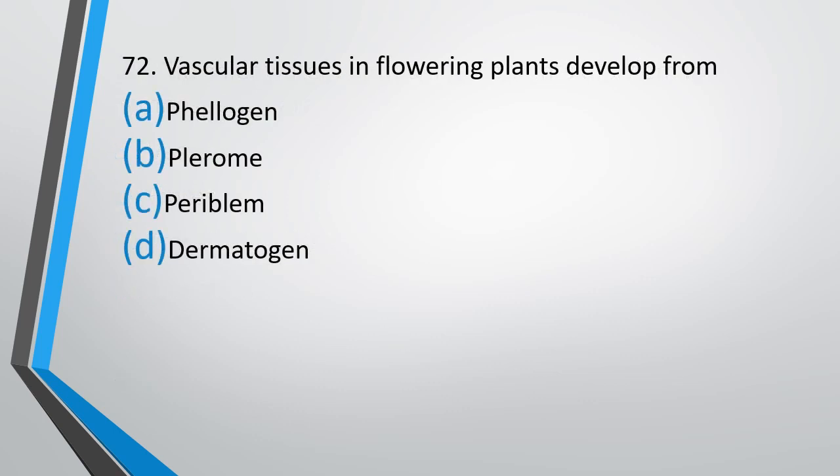Question number 72. Vascular tissue in flowering plants develops from? Phelogen, Pleurome, Peribulum or Dermatogen. Correct answer is option B — Pleurome.